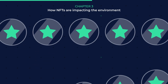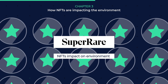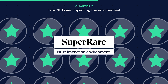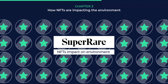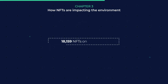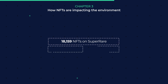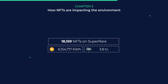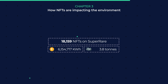Now let's take all the NFTs registered on SuperRare and see their combined impact on the environment to get an idea of the bigger picture. The total number of NFTs currently on SuperRare is 18,159. The ecological cost of keeping track of all these amounts to the energy usage of 6,154,717 kWh, or roughly 6 GWh, and emissions amounting to 3.8 metric tons of CO2.